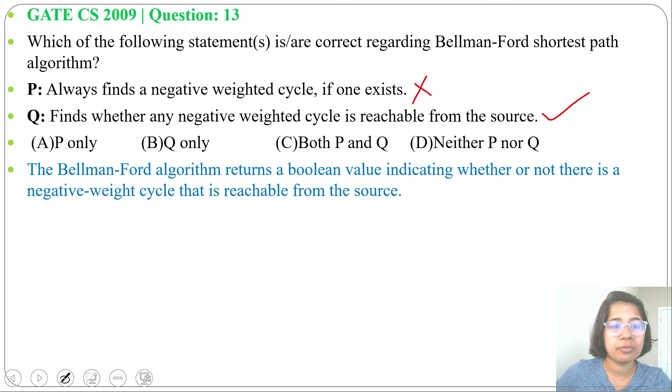It will return false, but it can inform that a negative weighted cycle is present that is reachable from the source. So statement P is false, statement Q is true.